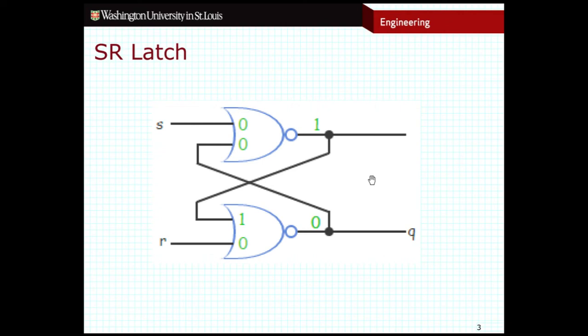So so far we haven't stored anything. We haven't actually stored any information yet in this circuit. But let's consider again the case where S is high and R is low. So when S is high and R is low, the output of Q is also high.